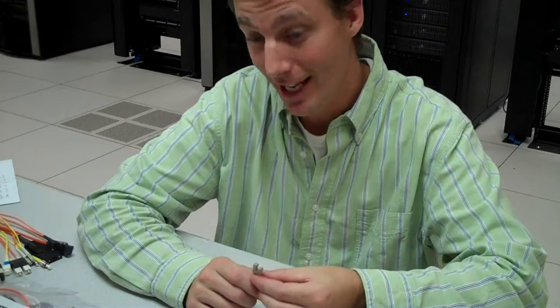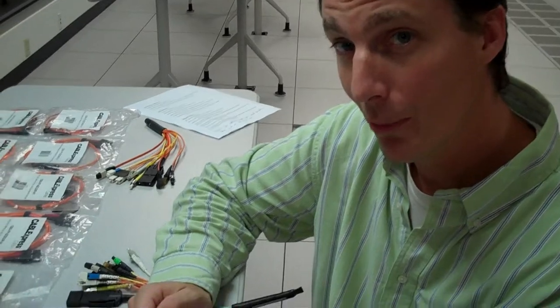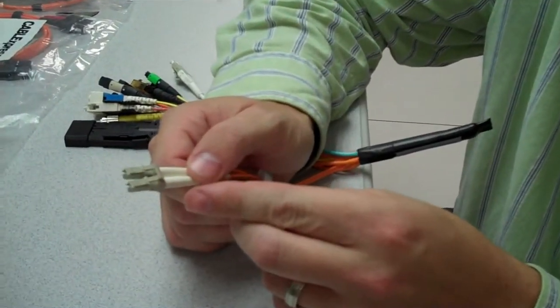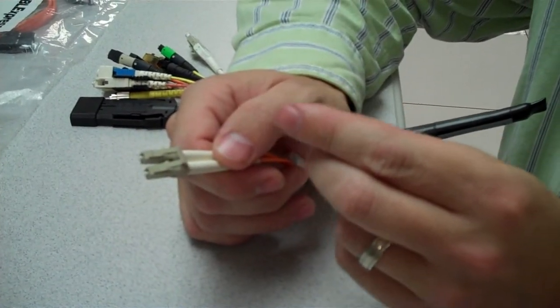Here is an LC connector with 1.5 millimeter ferrules. LC stands for Lucid Connector. Aptly named, that's who it was made by. With push-pull mating like the SC but small form factor, the LC is becoming the predominant fiber network connection.